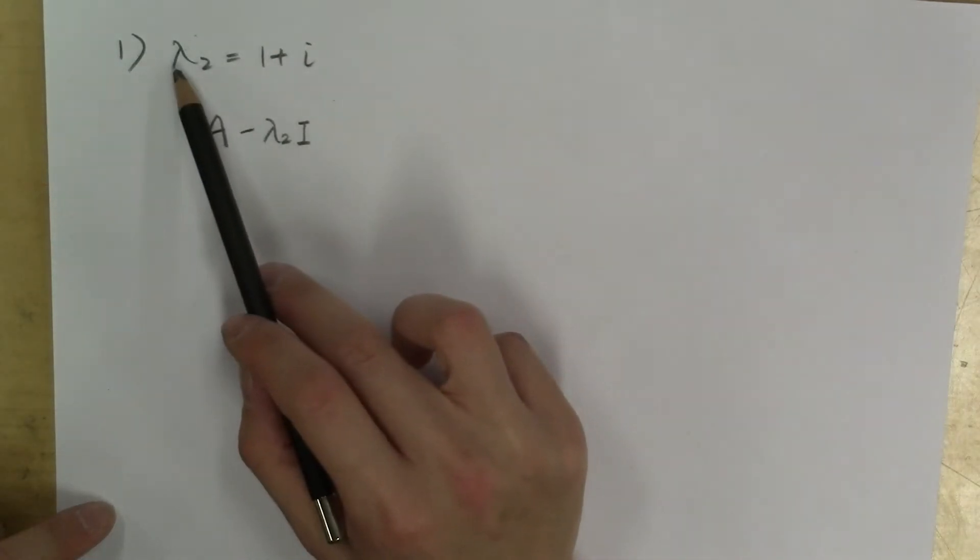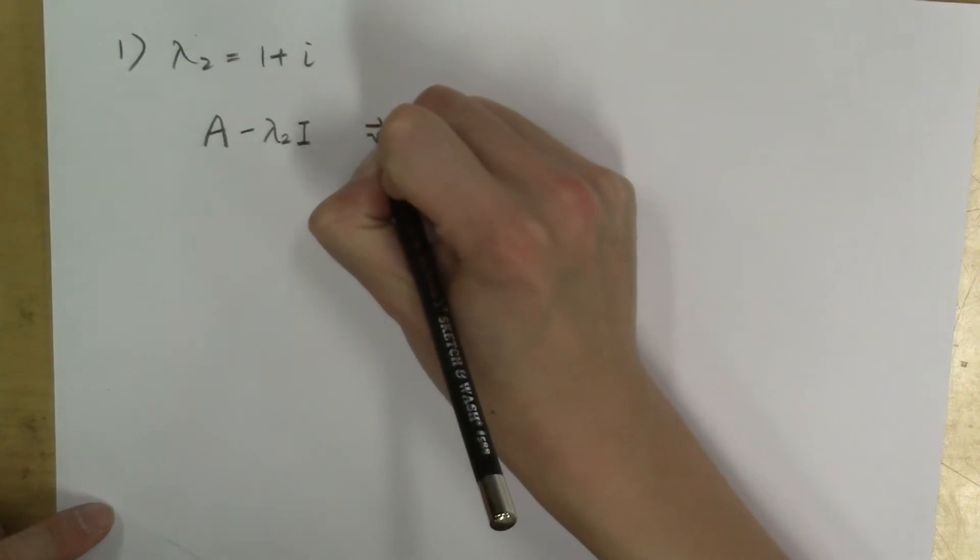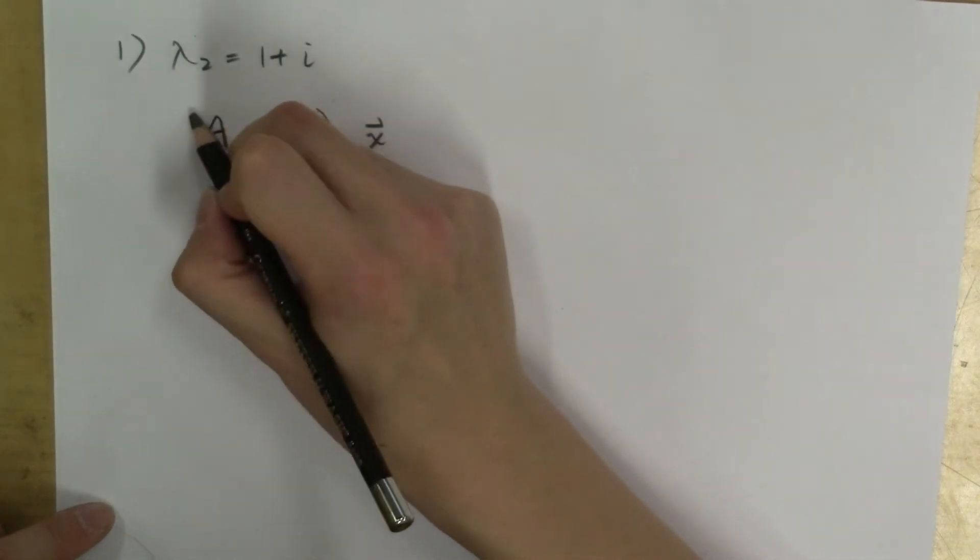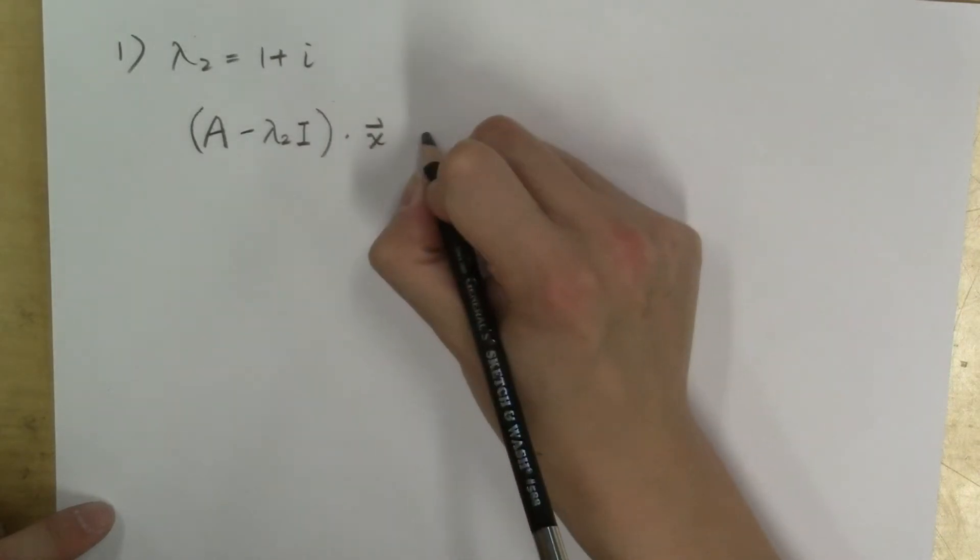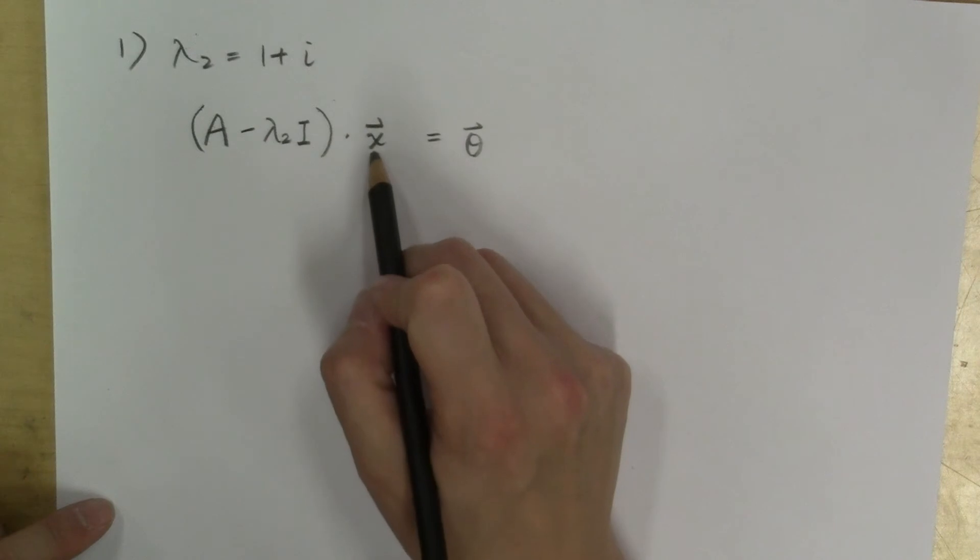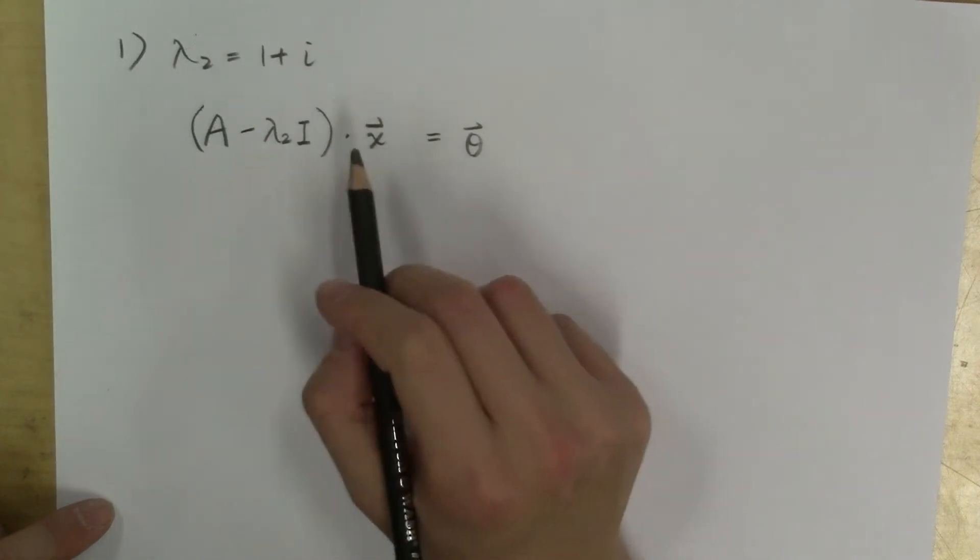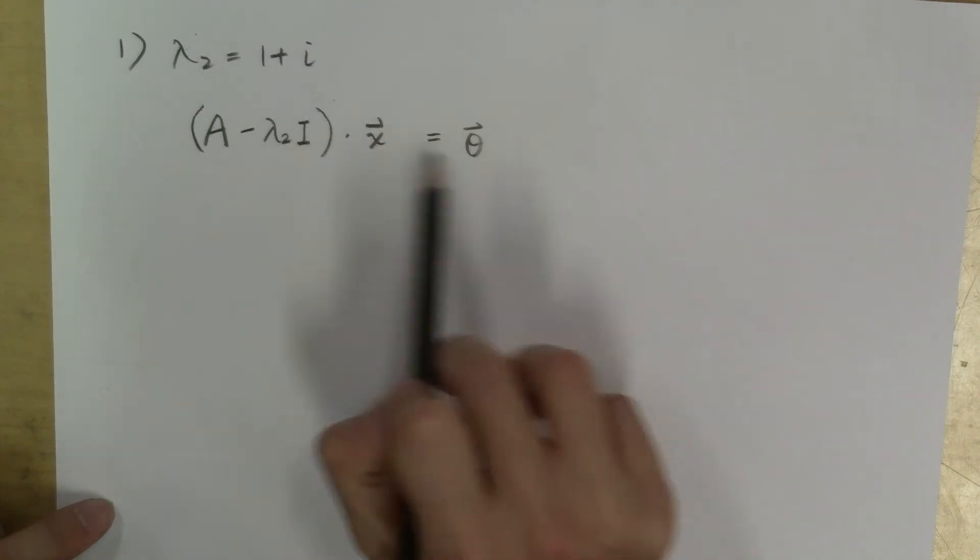That's right, because the eigenvectors corresponding to lambda sub 2 are those non-zero vectors x that satisfy this linear relationship: A minus lambda sub 2 times I multiplying to x equal to the zero vector. Finding those non-zero vectors is equivalent to finding non-zero solutions to this homogeneous linear system.